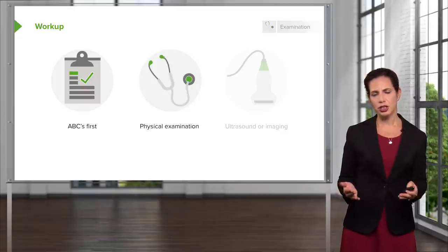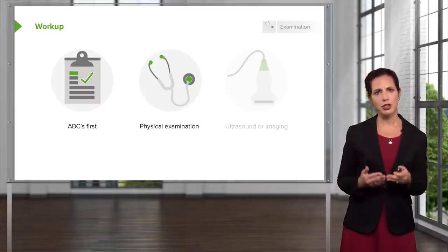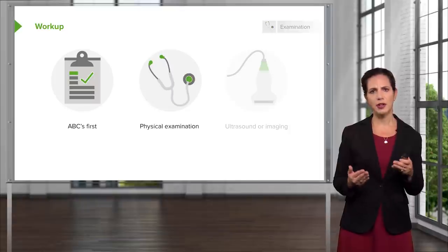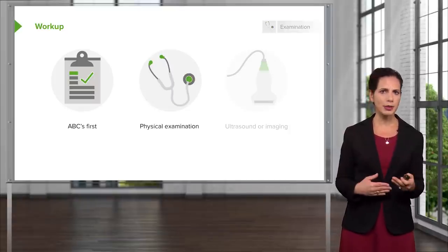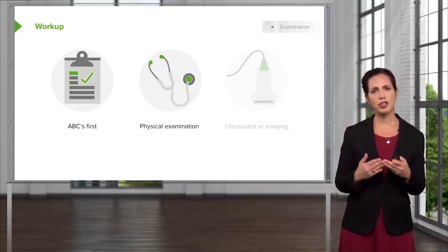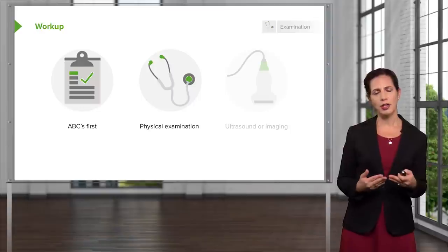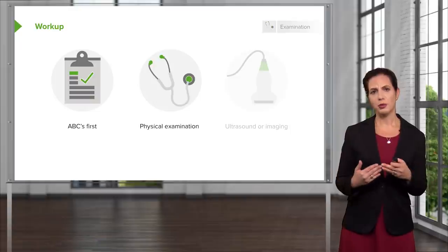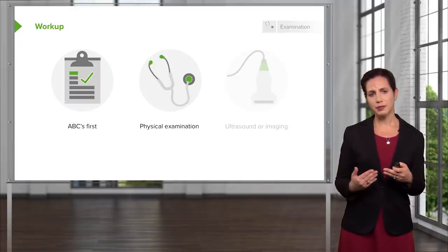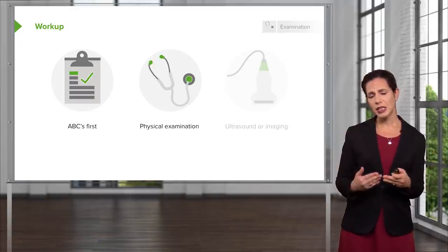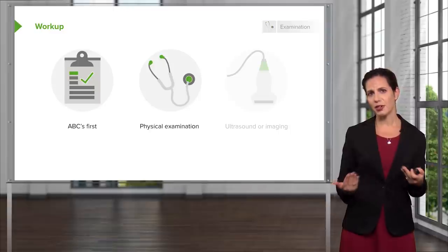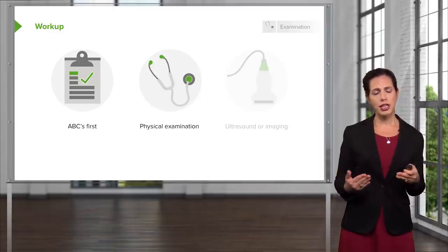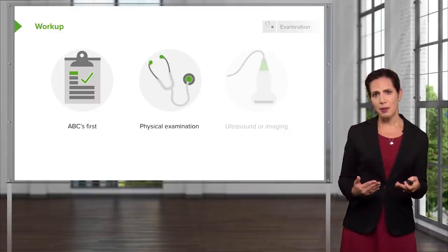You want to do a physical examination — look at your patient, listen to their heart and lungs, and feel their abdomen. You want to try to feel for a palpable aorta. As the aorta gets larger, it will be more readily palpable because it will be a larger structure in the abdomen, and it will feel like pulsations. Generally, if you can feel a big aorta, that's a bad sign for the patient.